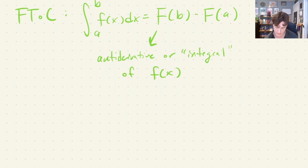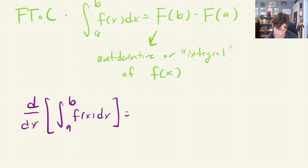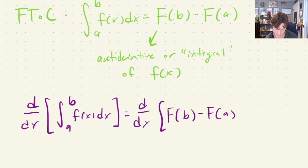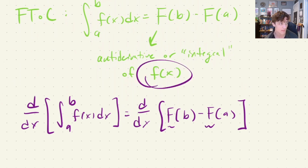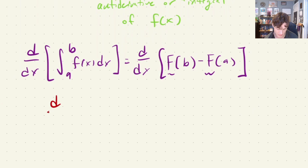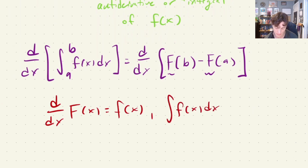Let's take the derivative of both sides of this equation. We get d/dx of the integral from a to b of f(x) dx equals d/dx of [F(b) minus F(a)]. When we take the derivative of the antiderivative we get back the integrand. Differentiating the antiderivative gives us the original function, and integrating little f gives us capital F — that is the relationship here.